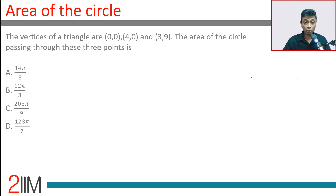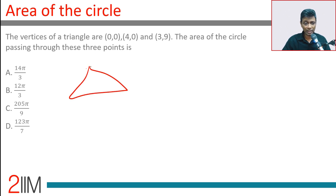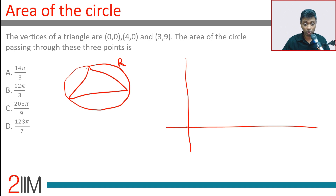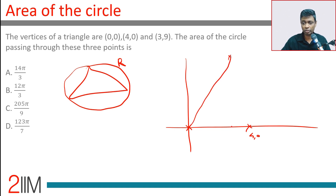The vertices of a triangle are (0,0), (4,0), and (3,9). We want the area of the circle that passes through these three points — that is, we want the circumradius. This looks like an impossibly tough question, but it is not. If you can visualize these points, it becomes much simpler.